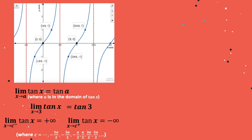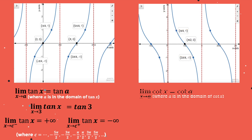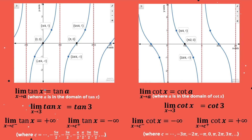The limit of tangent x as x approaches c from the left is equal to positive infinity, whereas the limit of tangent x as x approaches c from the right is equal to negative infinity, wherein c is equal to the asymptote. The limit of cotangent x as x approaches a is equal to cotangent a, where a is in the domain of cotangent x. For example, the limit of cotangent x as x approaches 3 is equal to cotangent 3. The limit of cotangent x as x approaches c from the left is equal to negative infinity, whereas the limit as x approaches c from the right is equal to positive infinity, where c is equal to the asymptote.